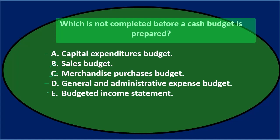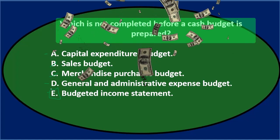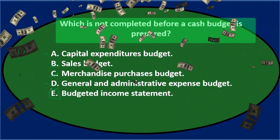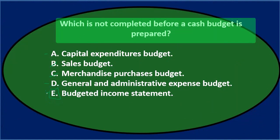Which is not completed before a cash budget is prepared? Either A. capital expenditures budget, D. general and administrative expense budget, or E. budgeted income statement. Of those three, if I'm imagining what the last thing we're going to do is, I would think E is the last. The final product we're going to have is basically the balance sheet and income statement. Therefore, it can't be the case that we would have to do that before the cash budget. Final answer: E. Budgeted income statement.